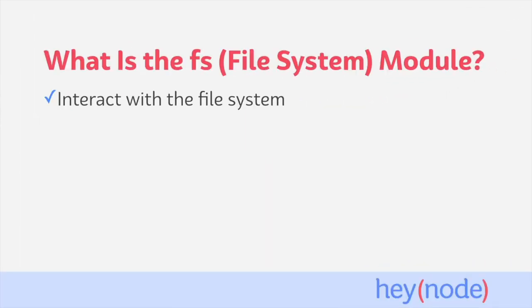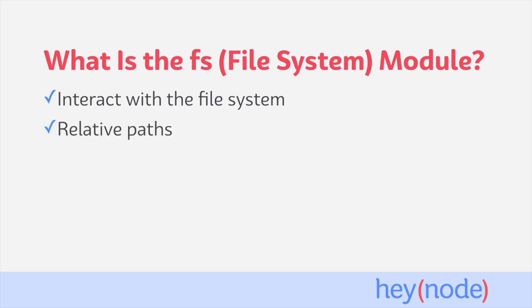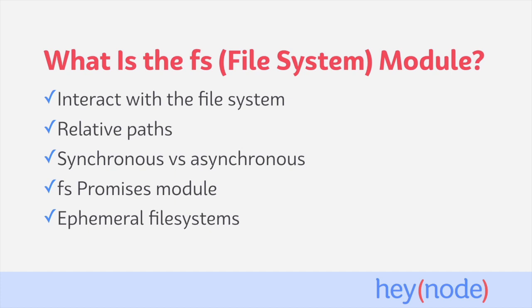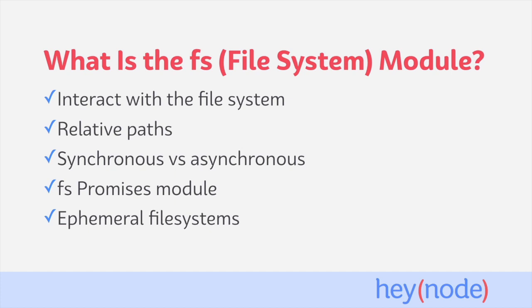In this tutorial, we'll explain some of the methods that the FS module provides which allow you to interact with the file system. We'll talk about how the FS module uses relative paths and how to create relative paths safely in order to access files. We'll learn about the synchronous and asynchronous versions of the different methods available in FS. We'll also talk about the new promise-based methods that the FS module exposes. And finally, we'll discuss ephemeral file systems and what that can mean when you're accessing files on disk when running your program.